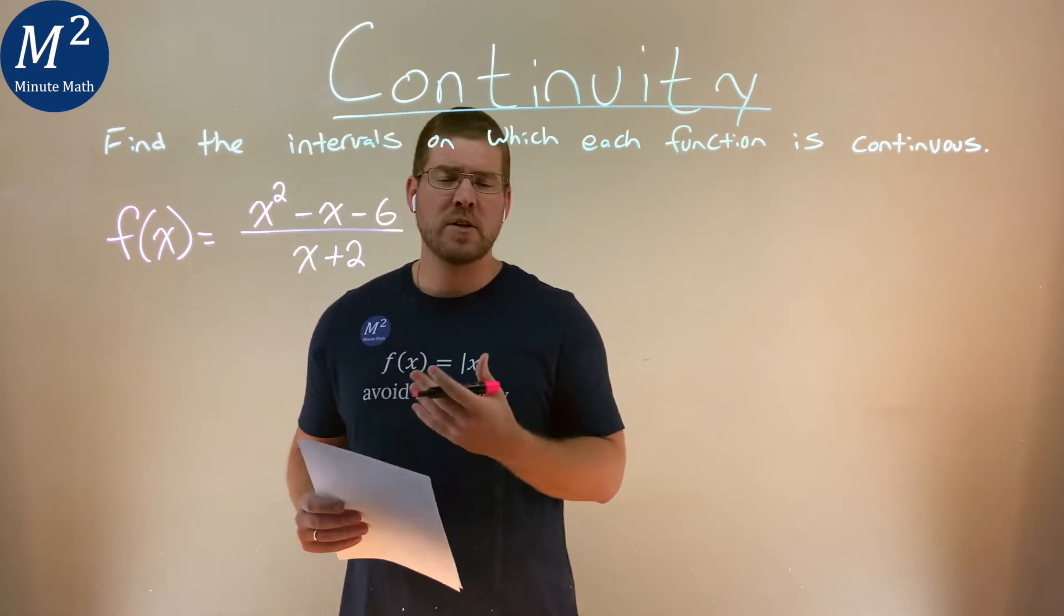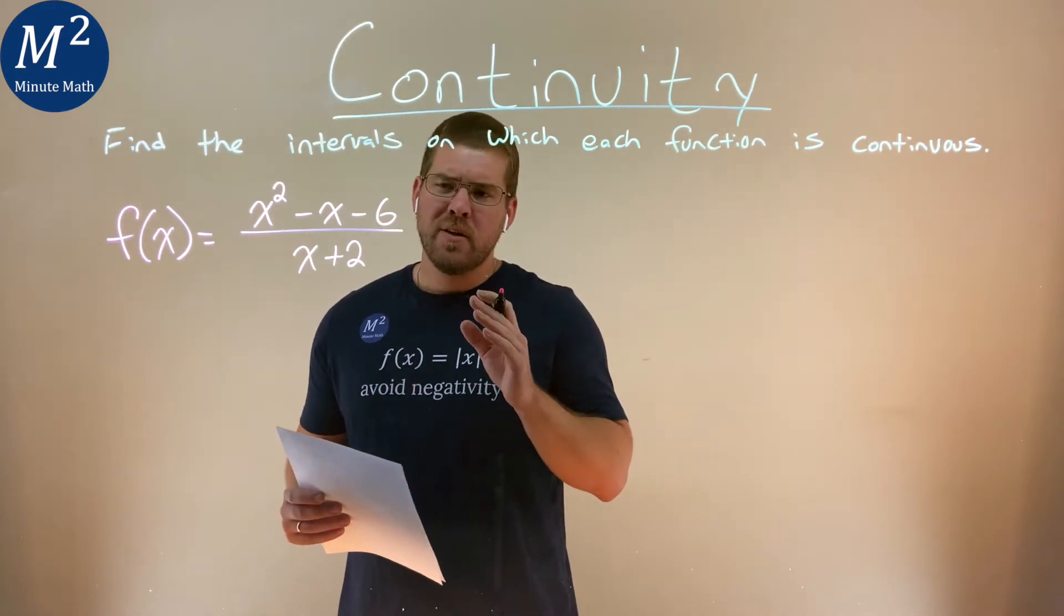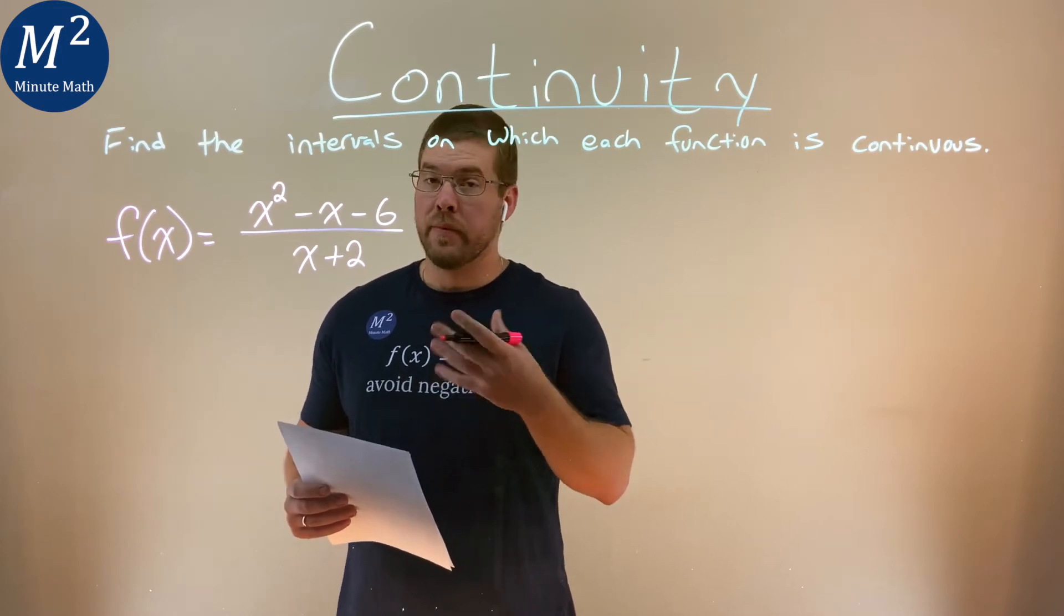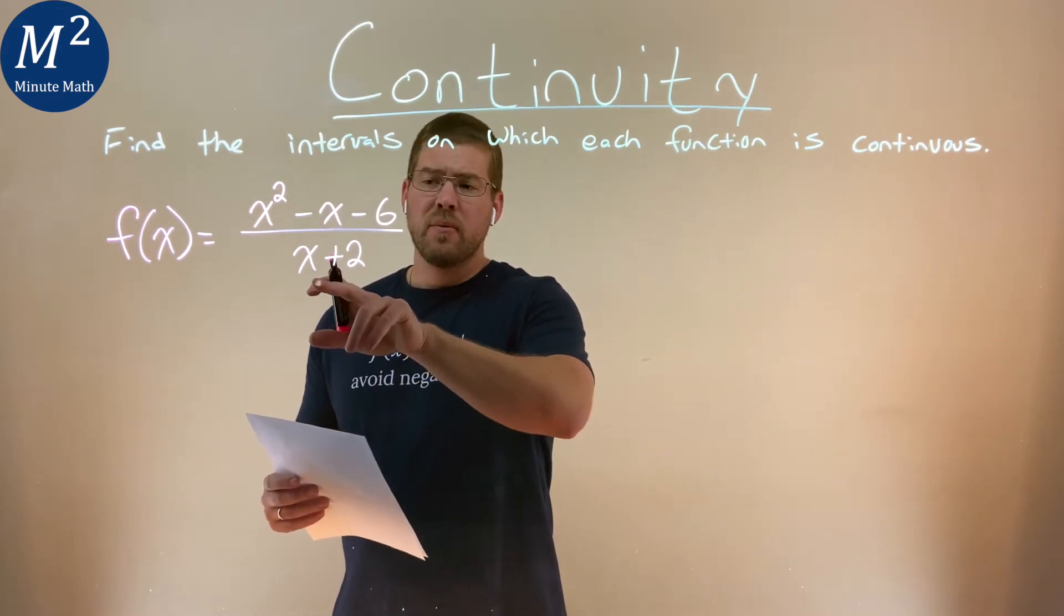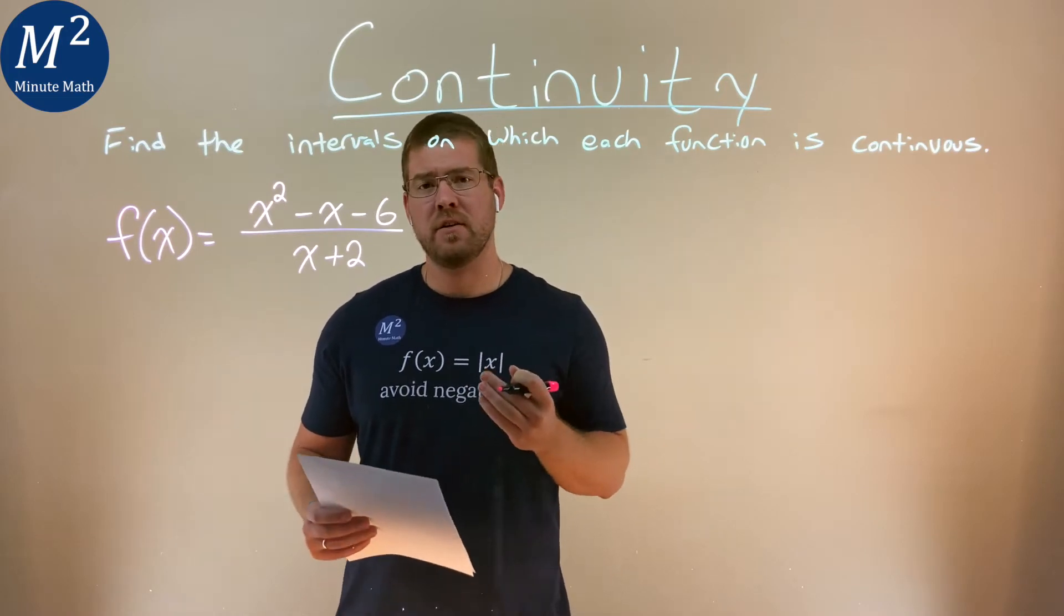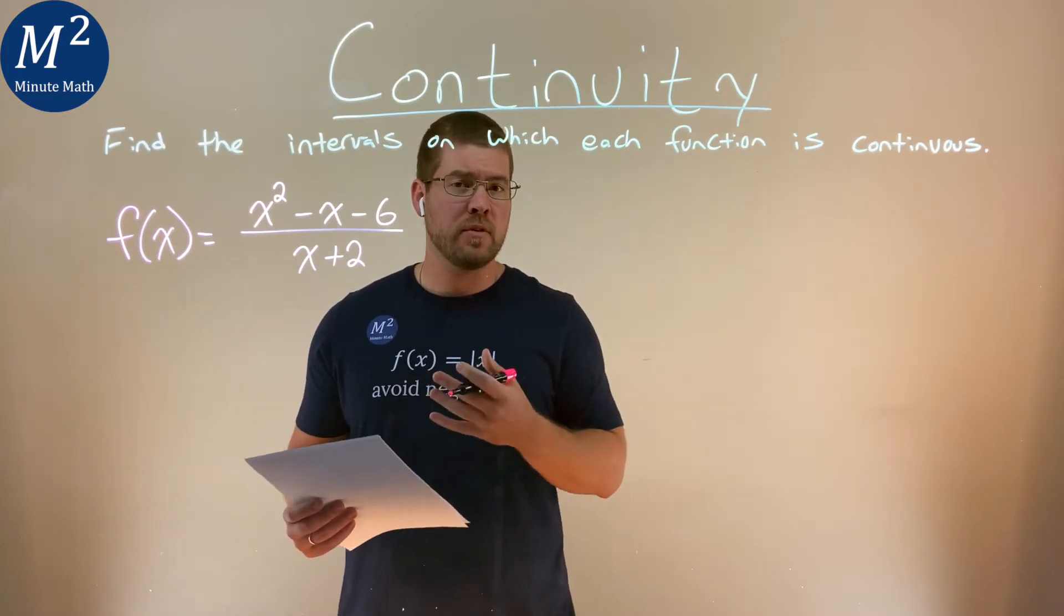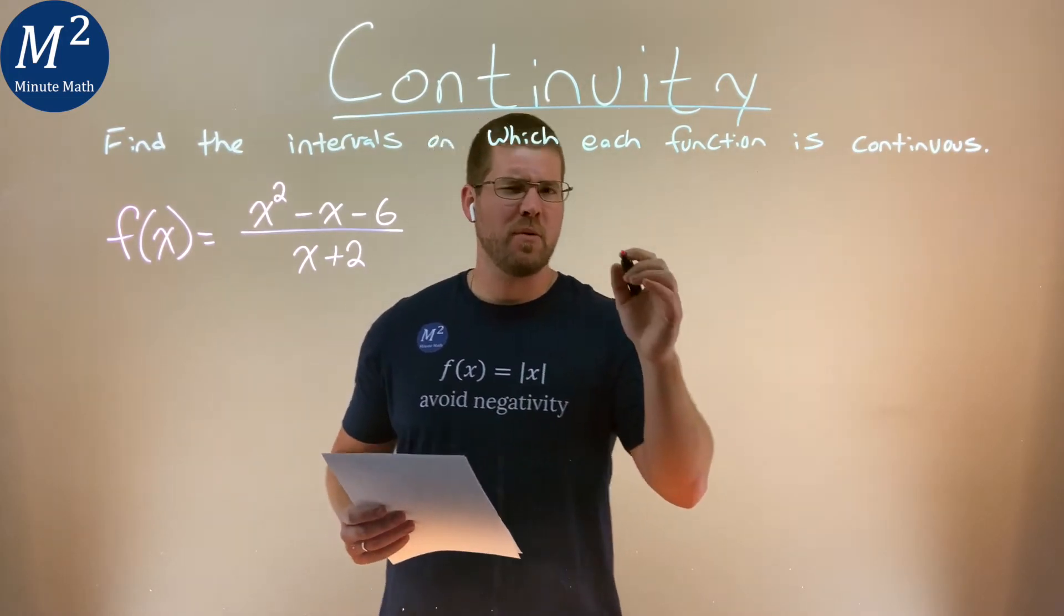Now, what we know about rational functions here is they're basically continuous where they exist. And, well, we're dividing by x plus 2, so there's a chance here now that the denominator will equal 0. So let's go find those values, and it's more than a chance.